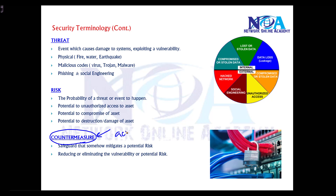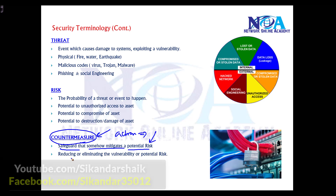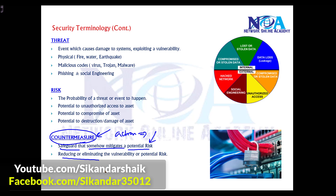Countermeasure is a term used to define the appropriate action taken to overcome possible threats or risks. It refers to safeguards or mitigations — how we overcome these threats and attacks by reducing or eliminating possible vulnerabilities and potential risks.